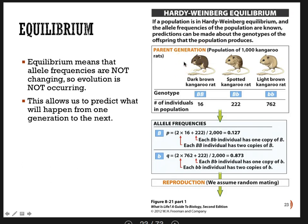Hardy and Weinberg were two scientists who independently figured out this math of evolution. They realized that if you look at the genotypes, you can figure out the allele frequencies. They started out by saying evolution doesn't always happen — and it's true, it doesn't. How can we figure out the math of a population that is not evolving? Once we can figure out the math of a non-evolving population, we'll figure out what happens when the population is evolving.